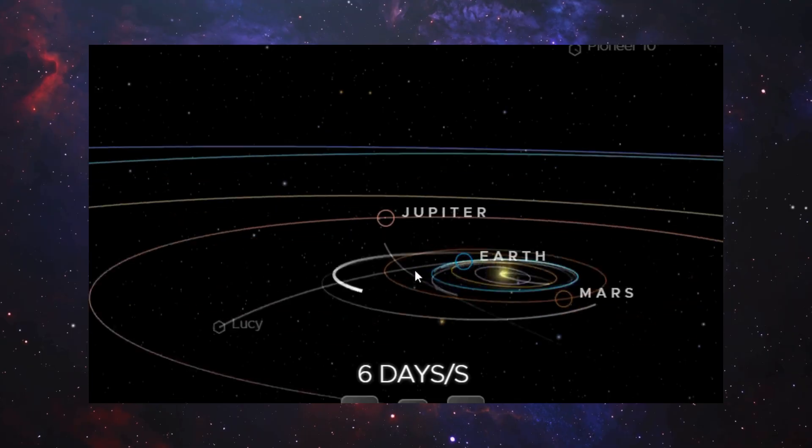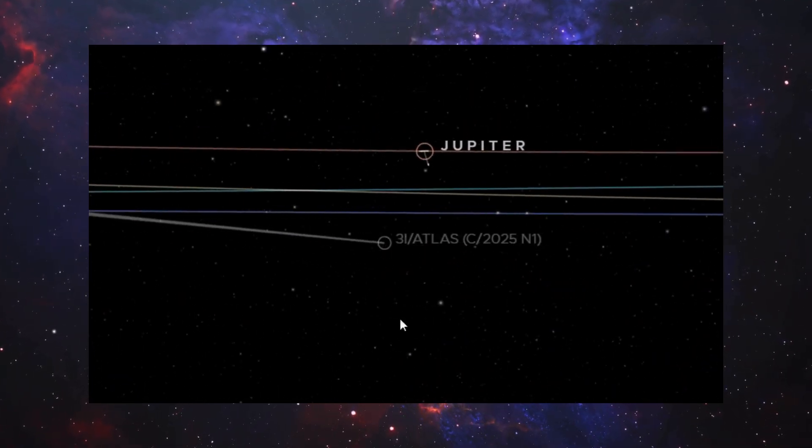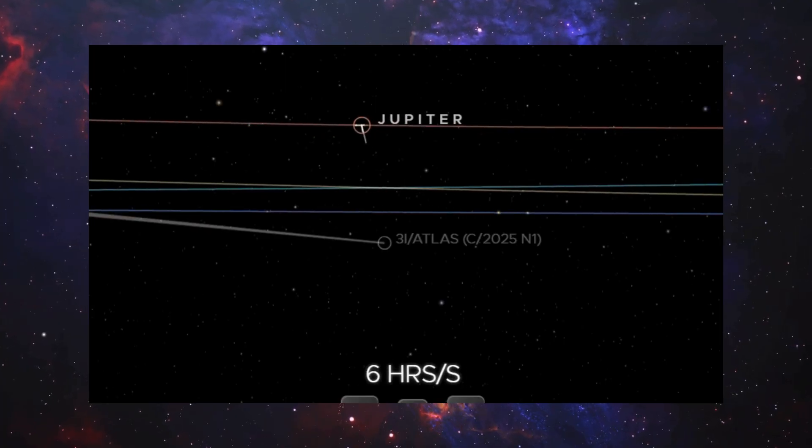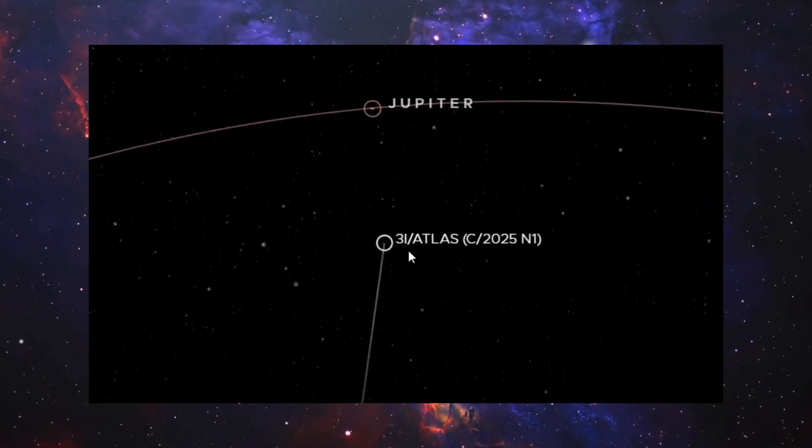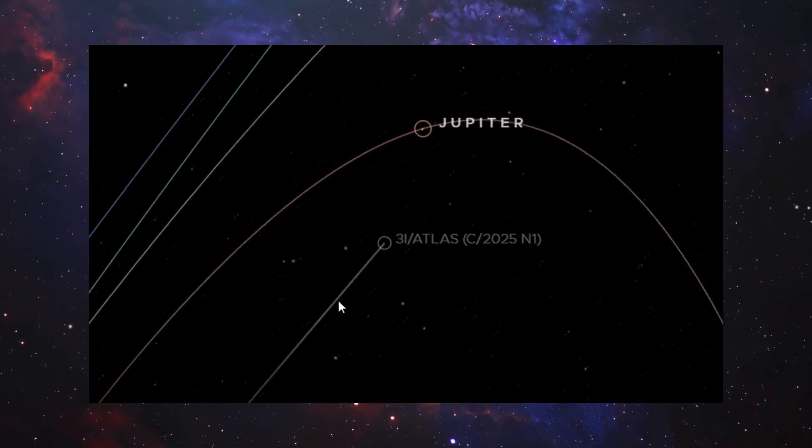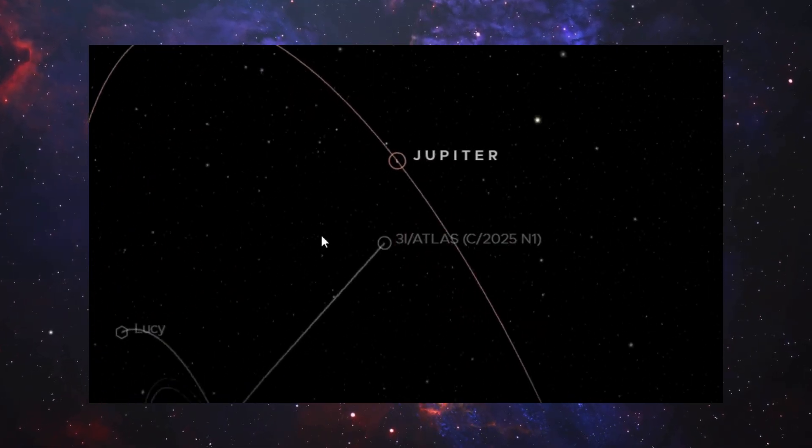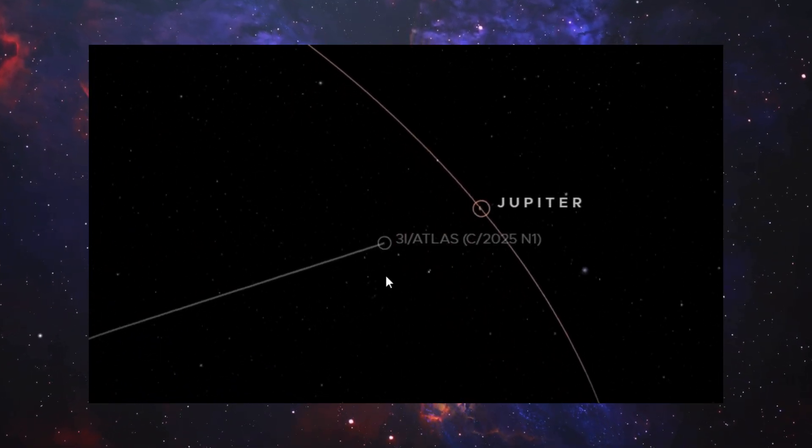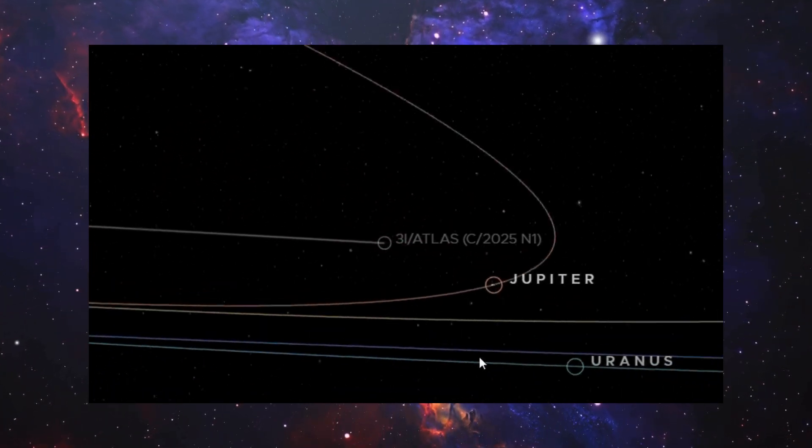Now look at this. NASA's calculations indicate that on March 16th, 3i Atlas will pass Jupiter at 33.21 million miles. Meanwhile, Avi Loeb independently calculated Jupiter's hill radius on that same date and came up with 33.24 million miles. The difference? 35,000 miles. 35,000 miles out of 33 million.